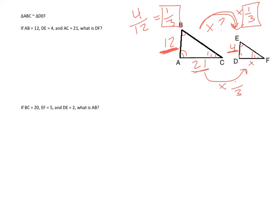So if this length is 21, and I want to find this length, I'm going to multiply by 1/3, so 21 times 1/3 is 7, so this is going to have a length of 7.